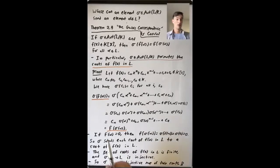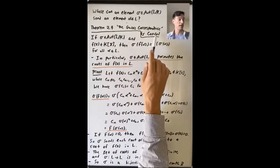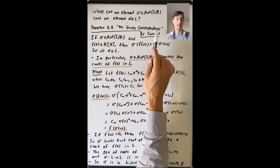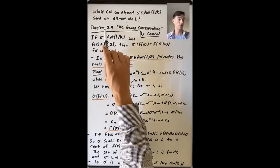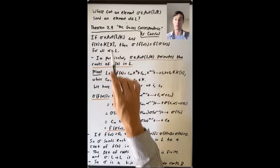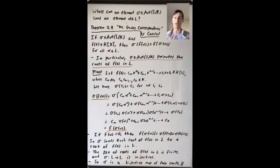What I'm going to prove here, following the presentation in Conrad's notes on the Galois correspondence, is Theorem 2.4 and Corollary 2.5 from those notes. Together I think this gives a nicer presentation than the corresponding result in Dummit and Foote, which is Proposition 2 in Section 14.1.